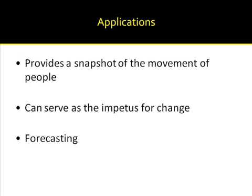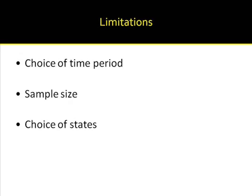We can also use this as a method of forecasting. As with almost any statistical technique, there are limitations. For example, the choice of time period is critical — if it is too long, you will find that people have made multiple changes between time 1 and time 2. You also need sufficient sample size to have stable estimates. Finally, your choice of job states is fairly important. These should not be so large that they are meaningless, nor so small that they begin to represent very small sample sizes.